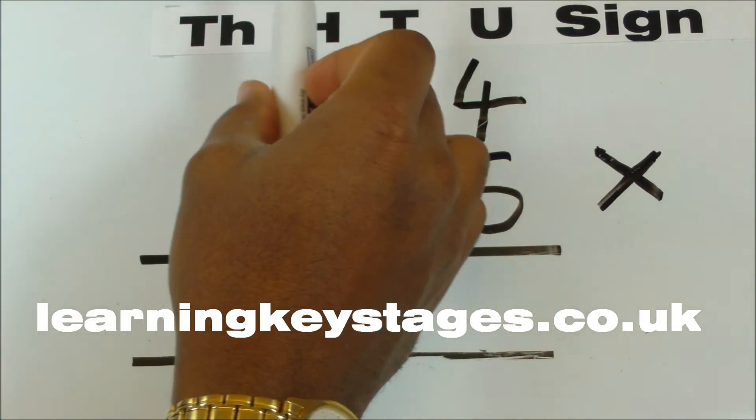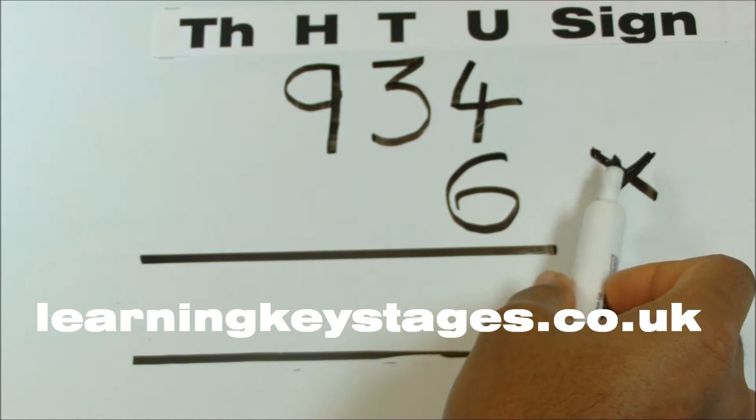We'll lay it out as follows with your 1000s, 100s, 10s and units columns laid out here and your sign here.